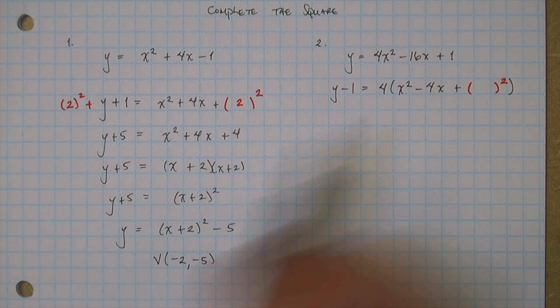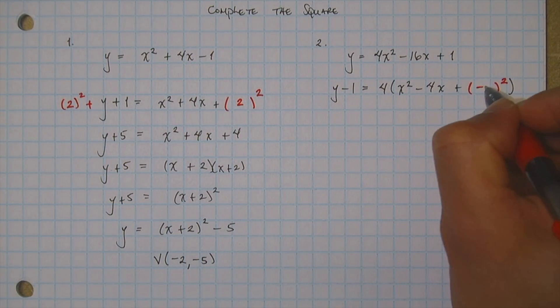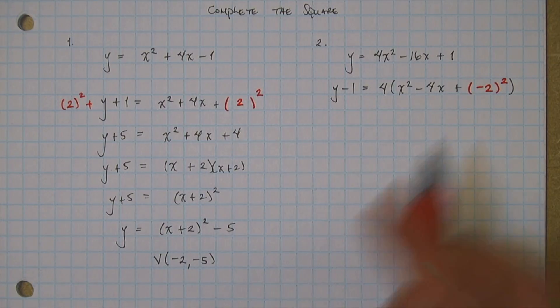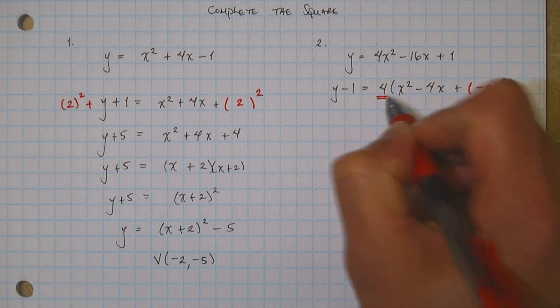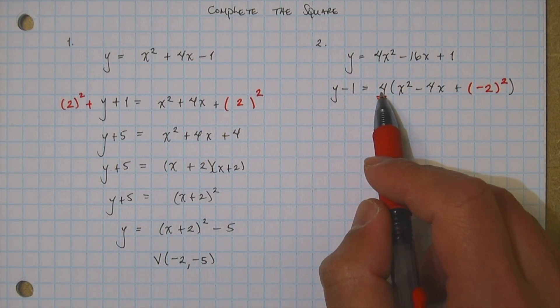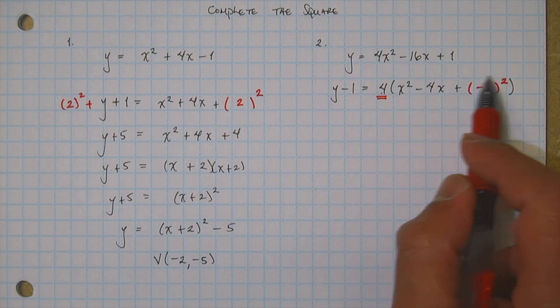And what's half of negative 4? Well, that's negative 2. Whatever you add on the right, you have to add on the left. Now be careful here. You see how this 4 right here? This guy is a multiplier. It's telling me that it's multiplying everything on the inside.